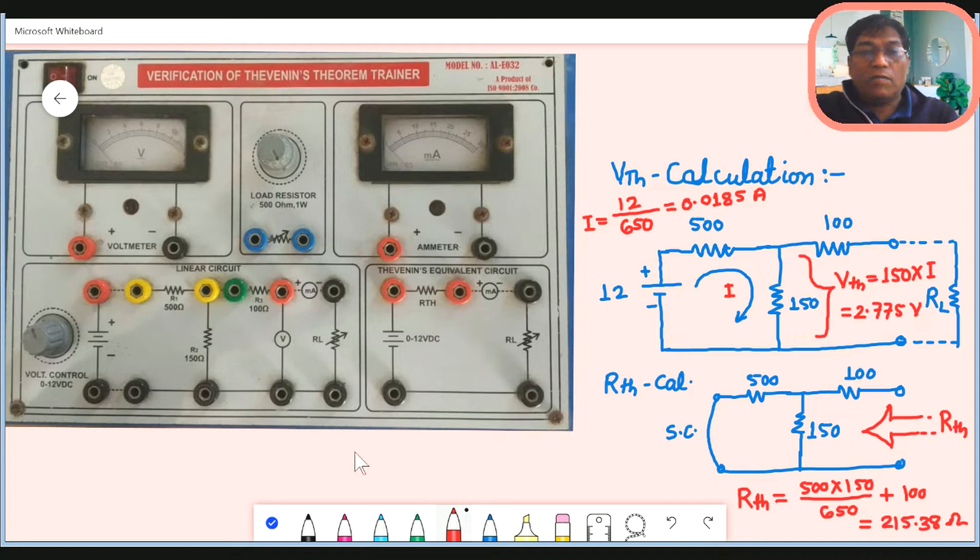As you're seeing this trainer kit, we can control the voltage 0 to 12 volts. This is a source, generally we are setting this to 12 volt. This is to be connected so the circuit will be complete. There is a dash line, these are connections. This means 500 ohm is connected, 150 ohm connected, 100 ohm connected.